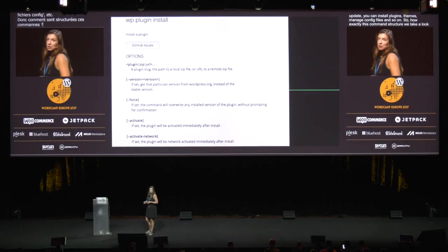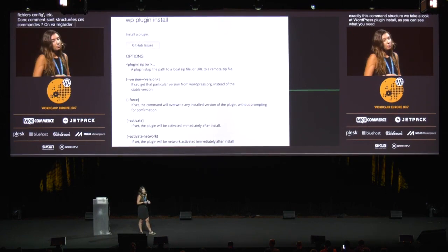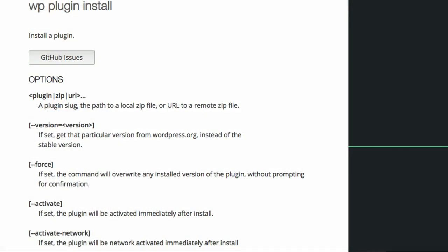Let's look at how a command is structured. As you can see, you need to specify the plugin by WordPress path or local zip file, and you also have a number of optional arguments — you can specify the version, and you can say whether you want to activate it immediately or not.